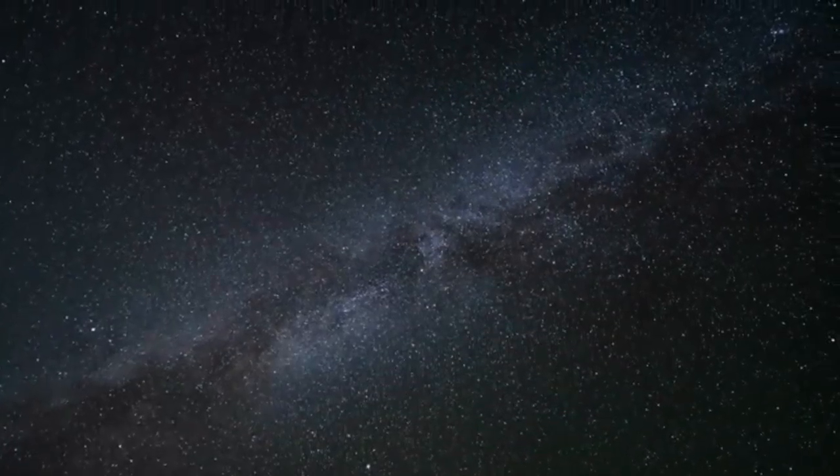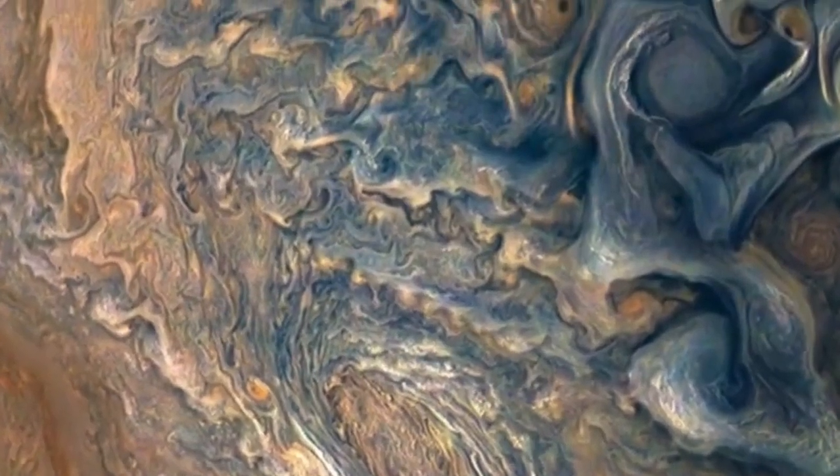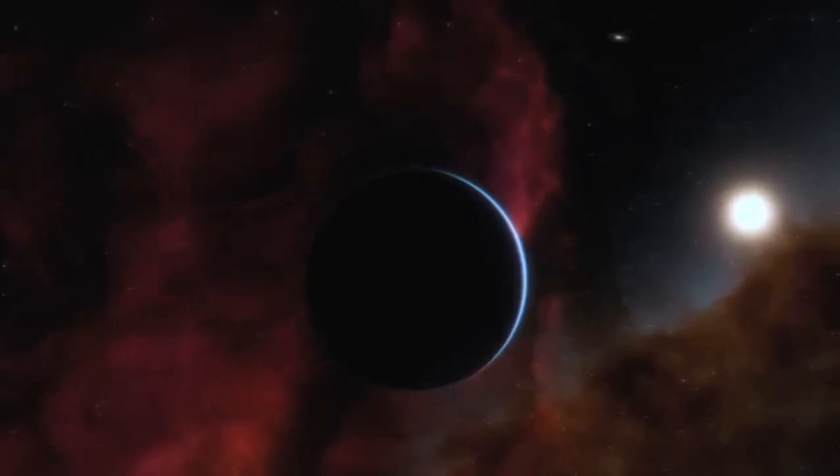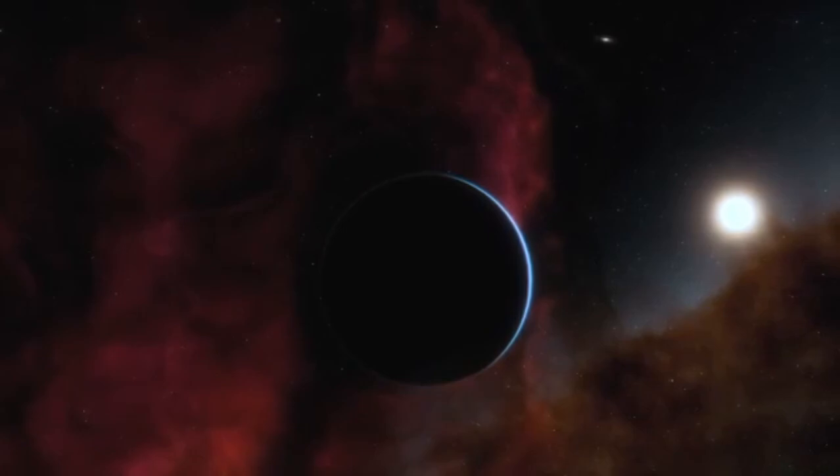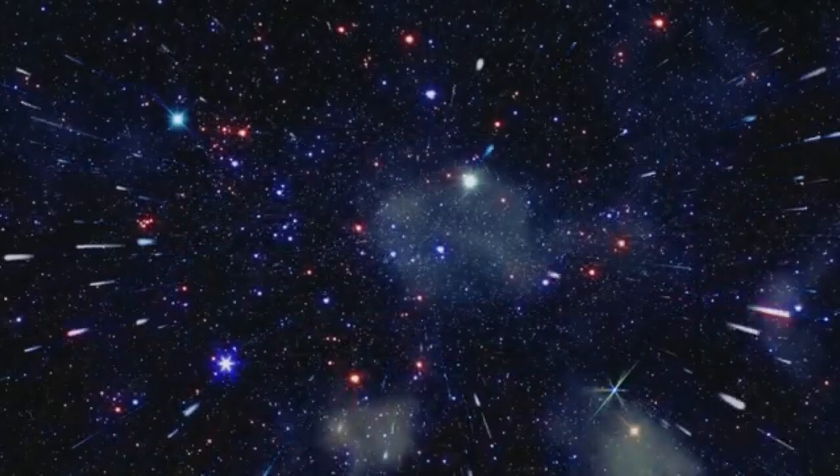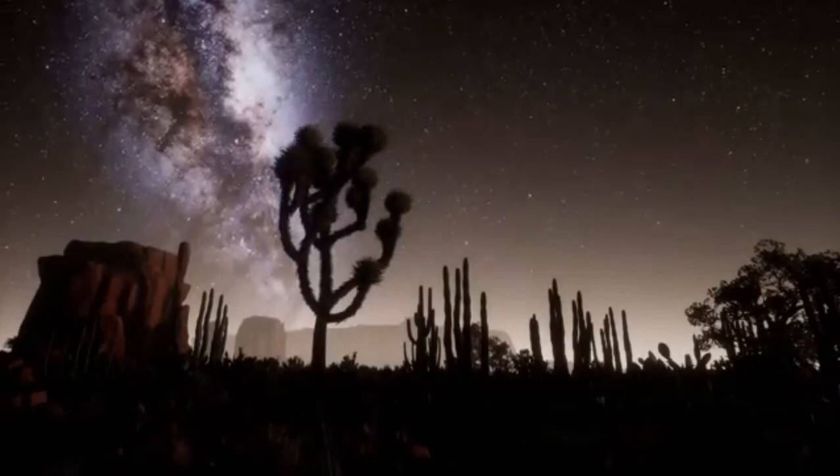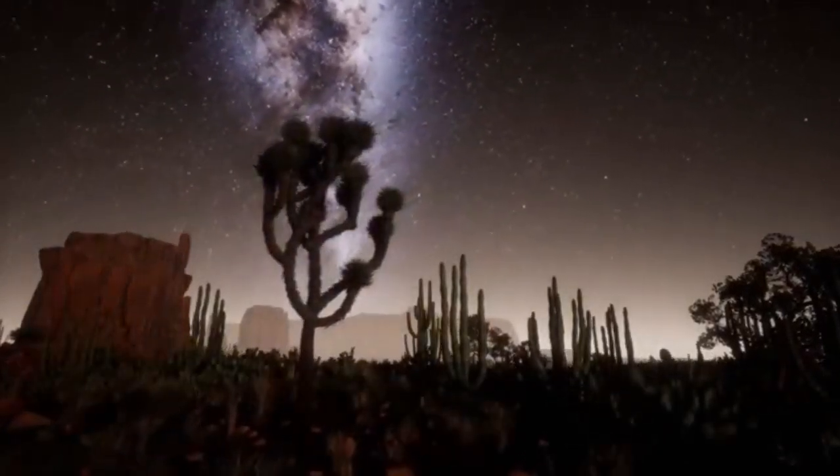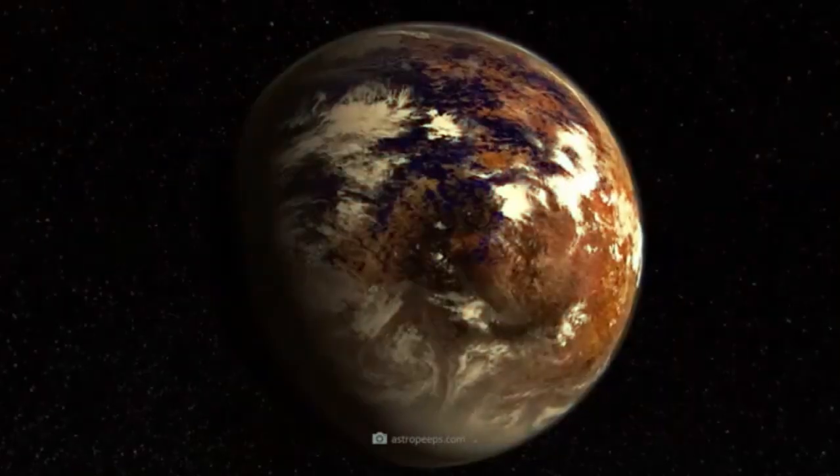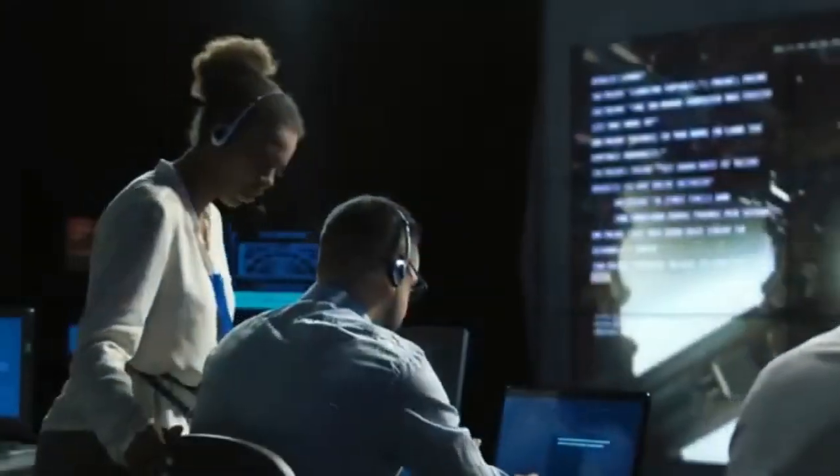In addition to a more expansive surface, increased planetary mass plays a vital role in habitability. A planet with higher mass exerts stronger gravitational pull, which allows it to retain a thicker atmosphere over longer periods. A dense atmosphere is essential for regulating temperature, distributing heat around the planet, and protecting living organisms from harmful space radiation such as cosmic rays and solar flares. Without this atmospheric insulation, surface conditions could become too harsh for life to endure. On Earth, the atmosphere acts as a protective blanket, trapping heat and filtering dangerous radiation. On a larger planet with stronger gravity, this blanket could be even thicker and more effective.